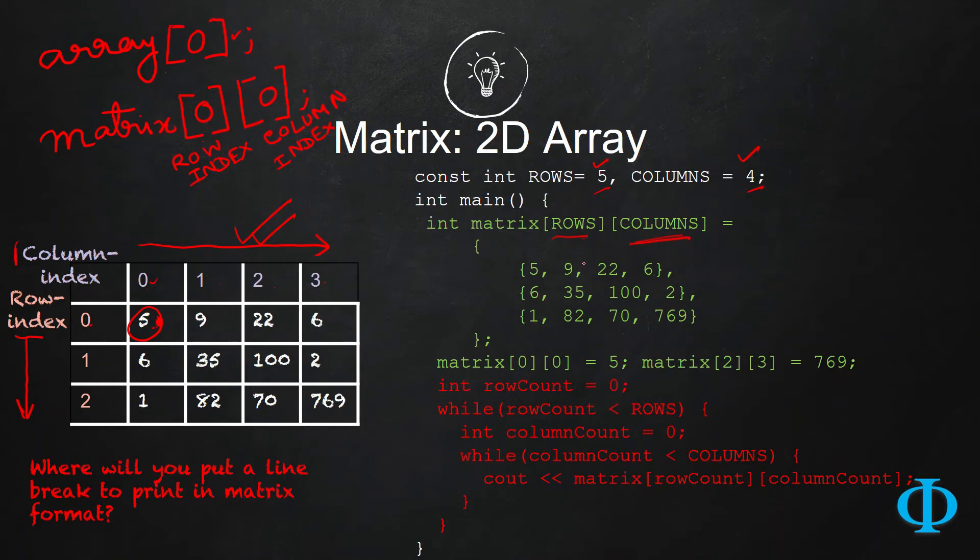In order to initialize a matrix, you just think of initialize multiple arrays. One array, let's say, let me just explain it in this way. Let us consider only the first row of the matrix, which is 5, 9, 22 and 6 in here. If I want to put it inside an array.